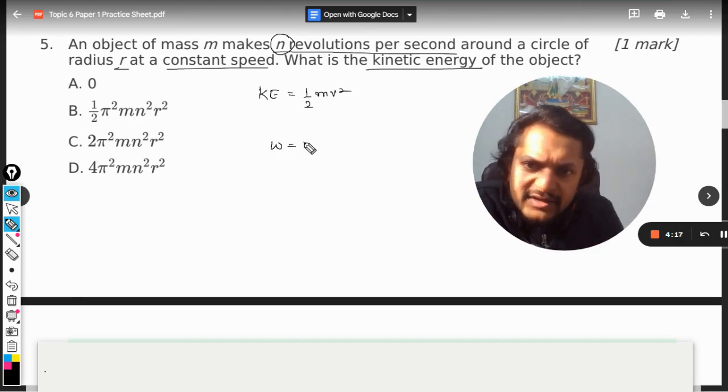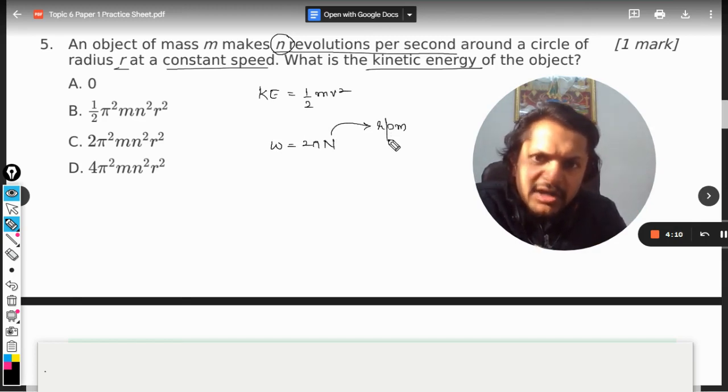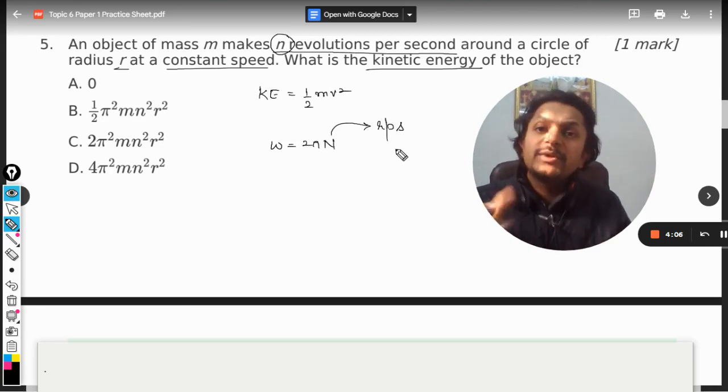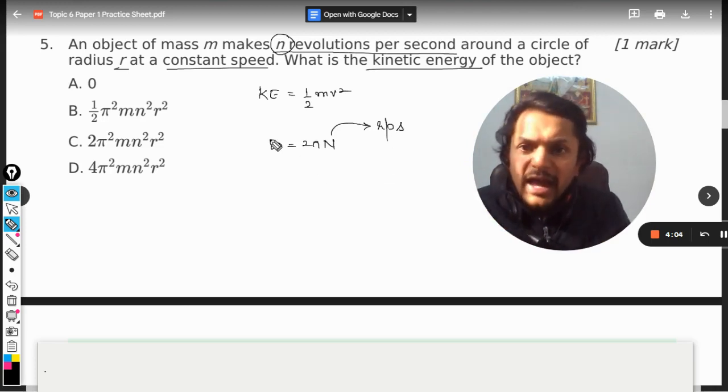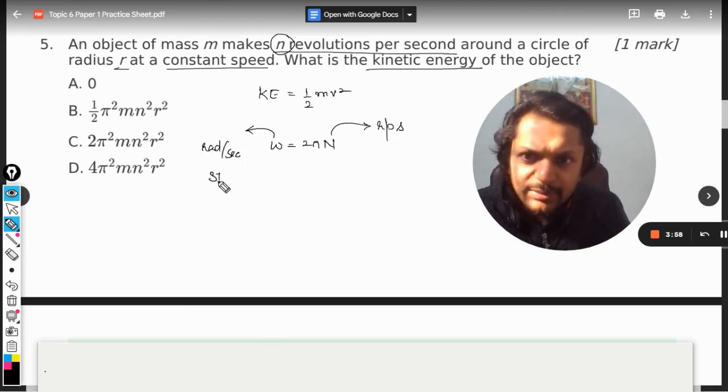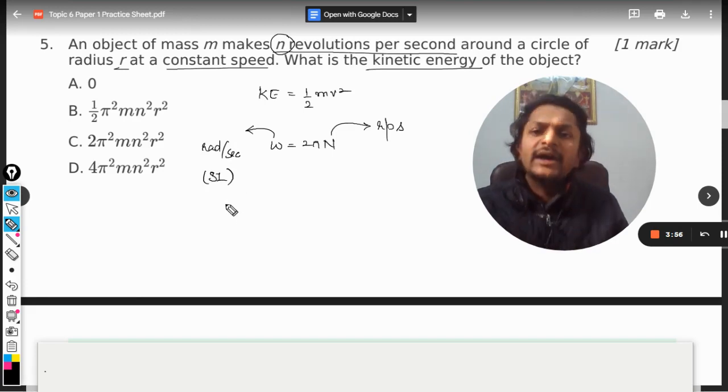Omega is equal to 2 pi n, where the units for n are revolutions per second, and the unit for omega will be radian per second. So radian per second is completely SI, that is why we need to change this unit into omega, this physical quantity to omega.